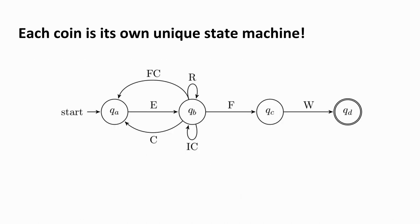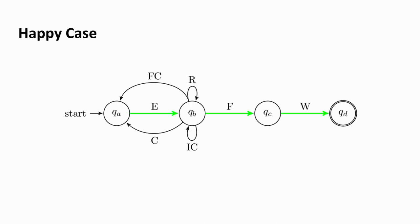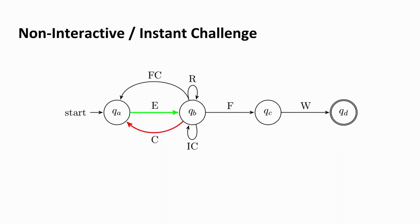The process in Plasma Cash is straightforward. I have a coin; in the happy case I exit it, it goes to the transition phase, after seven days I transition to the next phase — 'E' means exit, 'F' means finalize exit — and then I withdraw. In the unhappy case, I can do a non-interactive instant challenge where somebody exits and the challenger provides a proof that the exit is invalid, and the coin goes back to the deposited state, so the exit cannot settle.